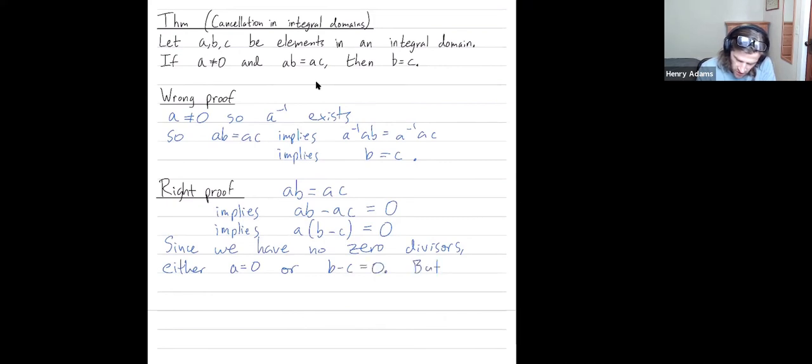either a equals zero or b minus c equals zero. But I told you that a is non-zero. For the proof in fields, you used a not being zero to give you a multiplicative inverse. In integral domains, you use a not equaling zero to give you that, a is not zero, so therefore b minus c has to equal zero.